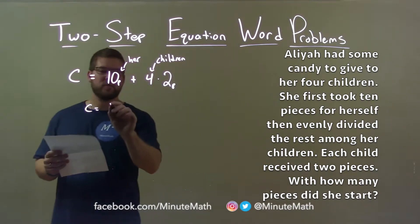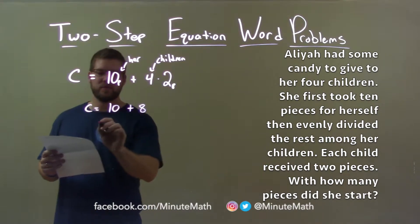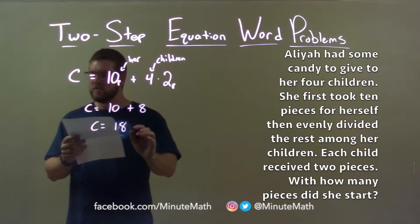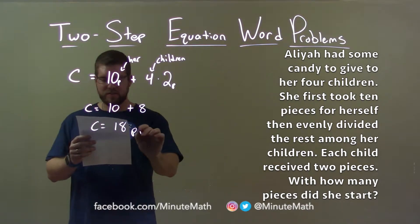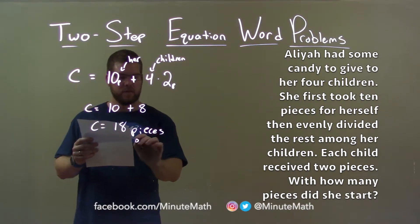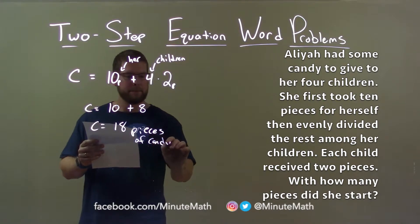Four times two is eight. So we have 10 plus eight, and 10 plus eight is 18. So she had 18 pieces of candy to start off with.